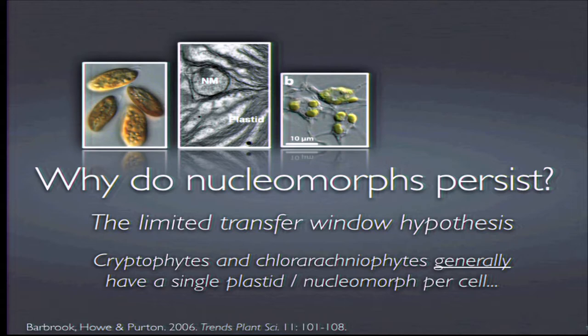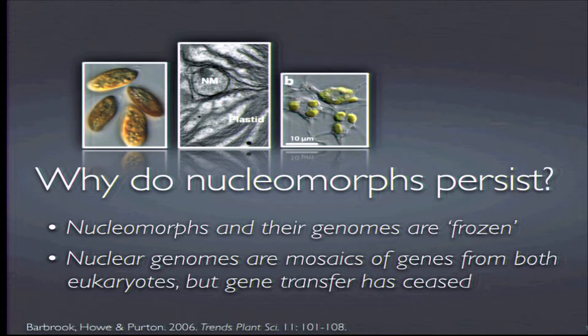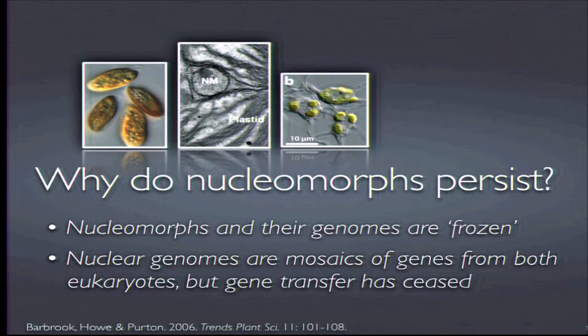Cryptophytes and chlorarachniophytes generally have a single plastid/nucleomorph complex per cell, consistent with this model: with only one organelle per cell, organelle lysis is not a viable source of DNA to move into the nuclear genome. This probably explains why nucleomorphs still exist in these two groups — the genomes appear frozen. Many genes have moved from nucleomorphs to host nuclear genomes, but these appear to be ancient transfers rather than recent ones.